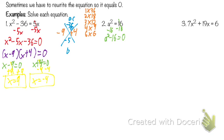We look for a GCF — there isn't one. We have subtraction and two terms, so that's a difference. Is a squared a perfect square? Yes, a times a. Is 16 a perfect square? Yes, four times four. So this is a difference of two squares. We factor it as (a minus 4)(a plus 4) — one's minus, one's plus. The order doesn't matter.